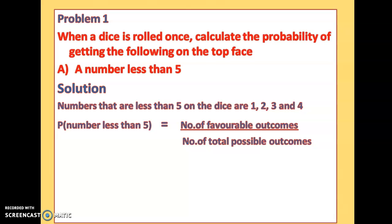The formula used in most probability problems is: probability of an event = number of favorable outcomes divided by number of total possible outcomes. This gives us 4 by 6, because there are 4 numbers less than 5 and 6 total possible outcomes. Simplifying 4 by 6 gives us 2 by 3.